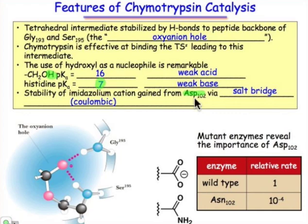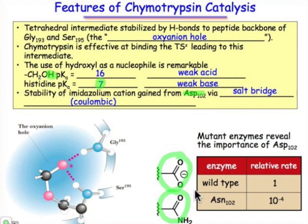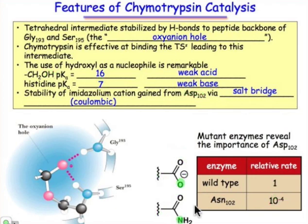To get an idea of the role of that aspartate group, we can examine a mutant enzyme where we've replaced the aspartate group at position 102 with an asparagine group. If we look at the relative rates, the wild type with aspartate 102 in place has a relative rate of 1. The mutant is 10,000 times slower — that one oxygen-for-nitrogen substitution changes the relative rate by a factor of 10,000.